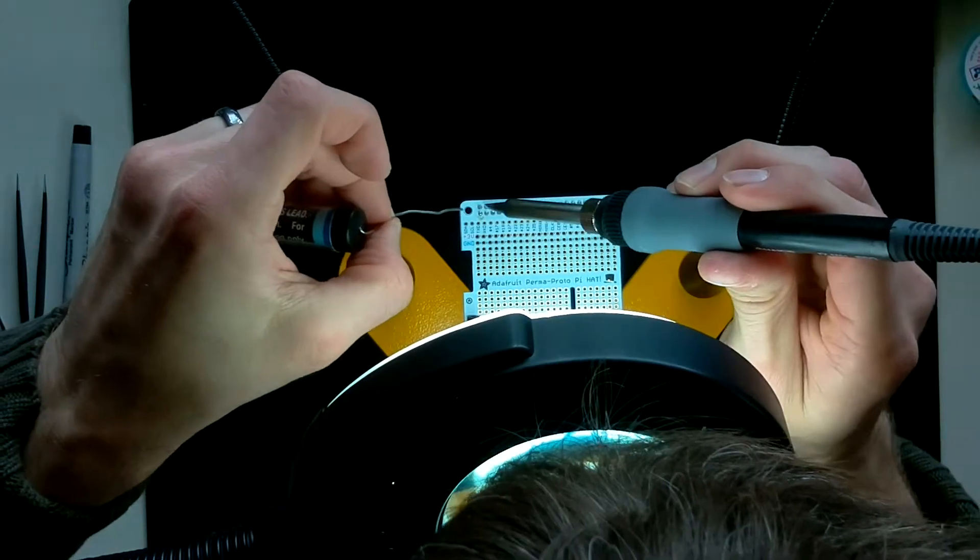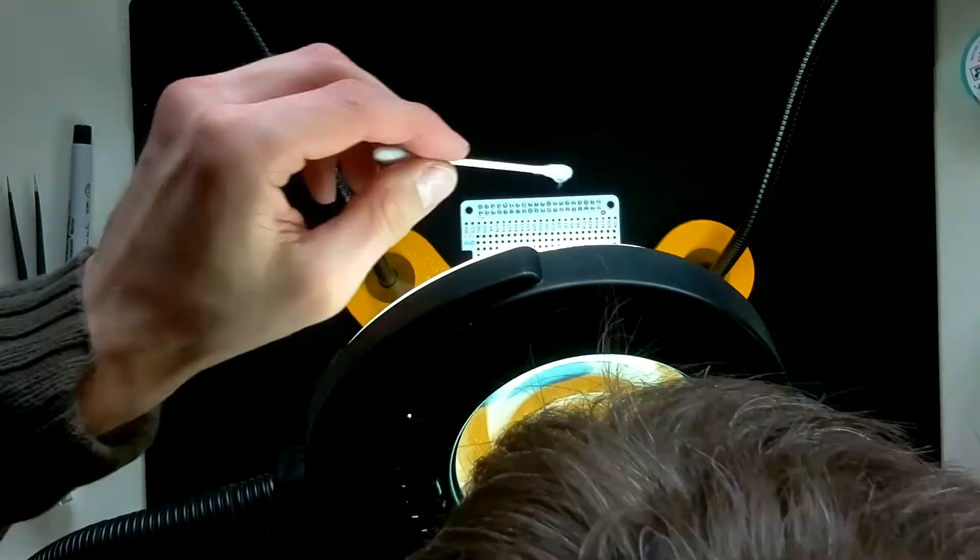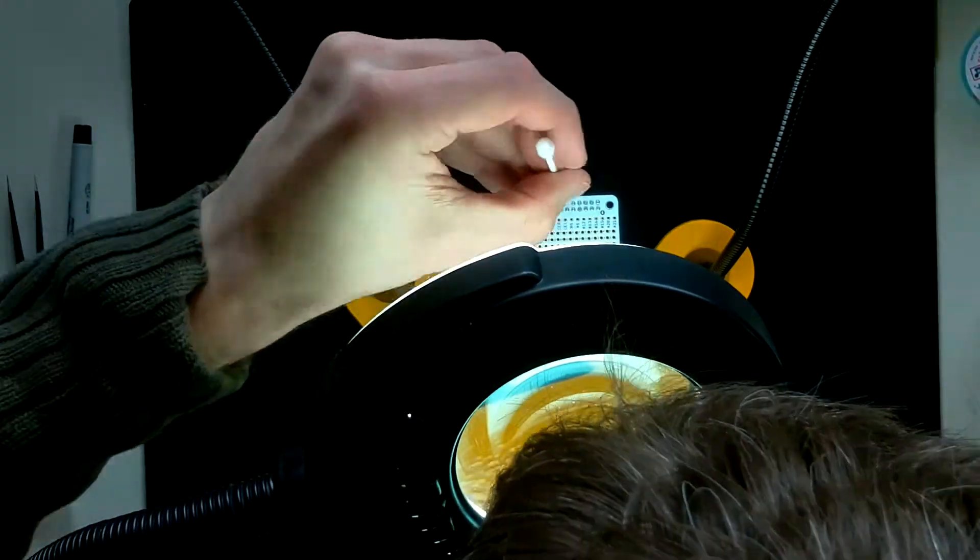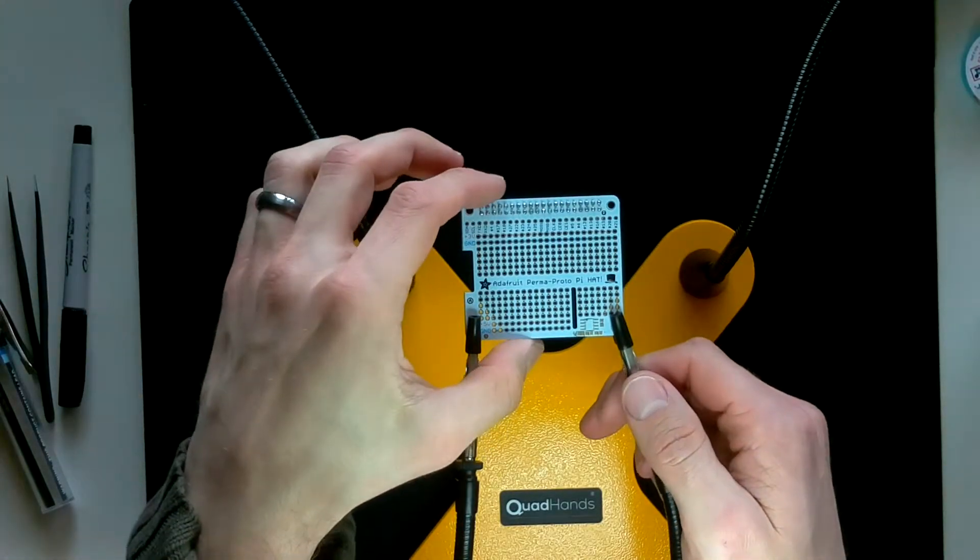I'll do a final inspection here to make sure that I got enough solder on each joint. Then I'll clean all the rest of the residual flux off. Most of the flux evaporates during soldering, but the rest of it you can get off with some isopropyl alcohol.